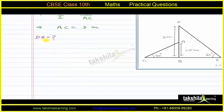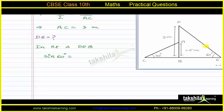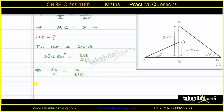Now we will find the length of slide DE, which is for elder children. Similarly, in right triangle DEB, sin 60° = opposite side / hypotenuse. For the angle of 60 degrees, the opposite side is DB and the hypotenuse is DE. DB is equal to 3 meters, so sin 60° = DB / DE. We know sin 60° = √3/2, so √3/2 = 3 / DE. Cross multiplying: √3 × DE = 6, therefore DE = 6/√3 meters.